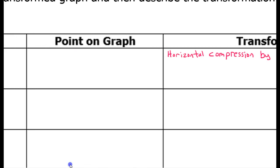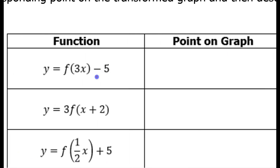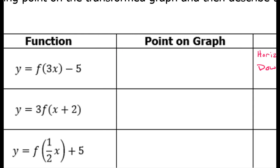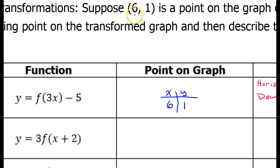Going back, this minus 5 is going to move the function down 5. So we have a horizontal compression and down 5. Now we're supposed to think about what will happen to the point (6, 1). We have an x value of 6 and a y value of 1. Any transformation on the outside of the function is going to affect the y value. I'll get my new y value by taking the old y value and subtracting 5. So 1 minus 5 is negative 4 — that's my new y value.